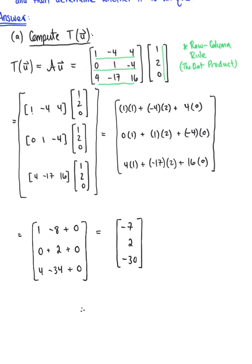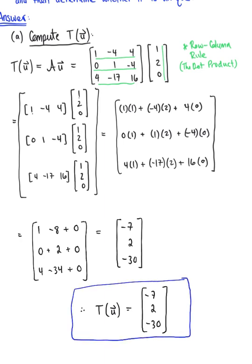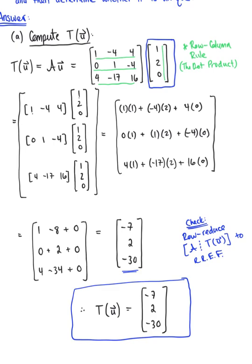That's our final answer. Therefore, the image of vector U under the action of T is the vector negative 7, 2, negative 30. Just for fun — if this question were on a quiz or exam — one way to check is to row reduce the augmented matrix [A | T(U)] to row reduced echelon form. What we should find is that vector U, the vector 1, 2, 0, is in fact a solution to the system.